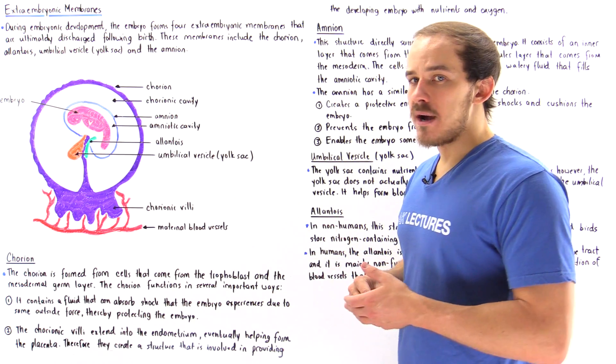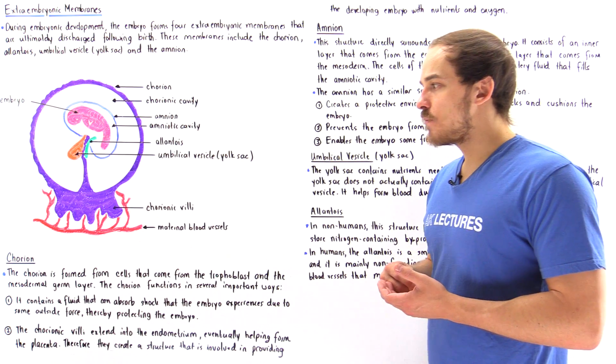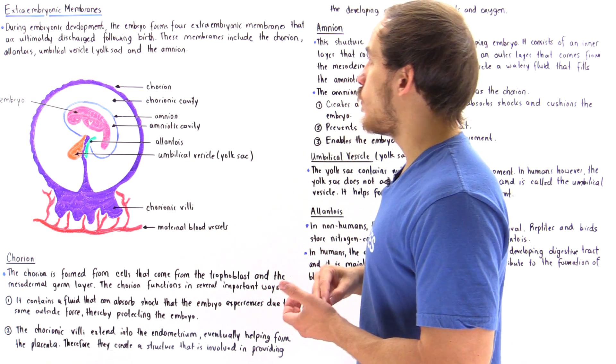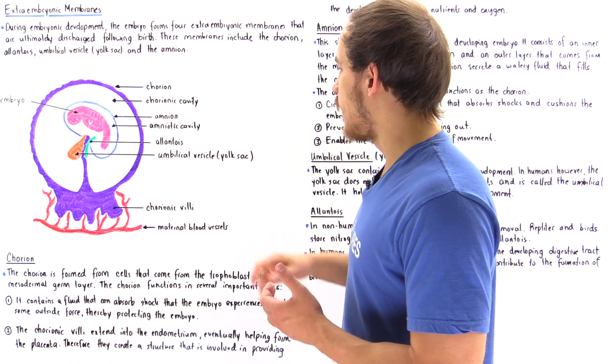So in this lecture, we're going to focus primarily on the embryonic development of the human embryo. And to see what we mean by these four extra embryonic membranes, let's take a look at the following diagram.